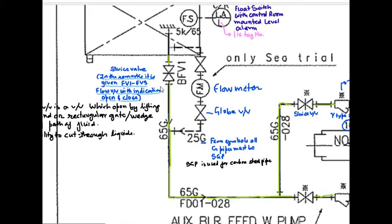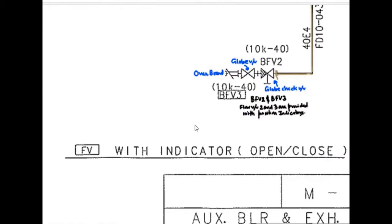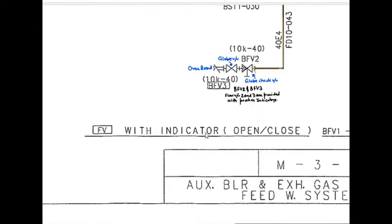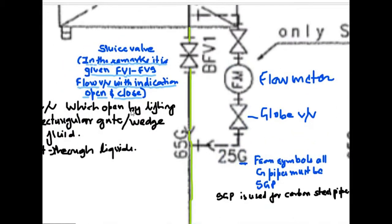So the line from the Cascade Tank is close to a sluice valve. This is the symbol of sluice valve. In the remarks, it is given that flow valve 1 to flow valve 9, that is VF1 to VF9, all the valves are present with position indicators. That is open or closed position. This remark is given here in the corner. Flow valve with indicator open close VF1 to VF9. So this sluice valve has an open and close indication.